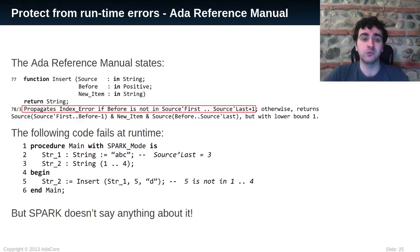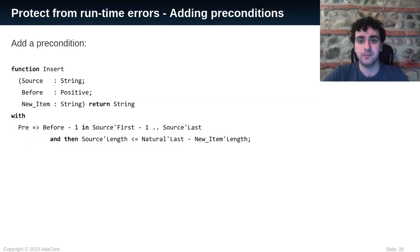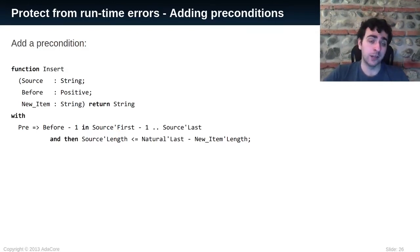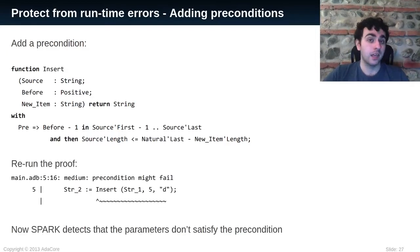We need to add a precondition to prevent calls to insert with inconsistent parameters. So first, we ensure that Before is in the expected range. The second part of the precondition is about the length — we need to make sure that the length of the resulting string is not larger than the last integer, otherwise at runtime there will be an overflow. If we rerun the proof, Spark now complains that the insert function has not been called with consistent parameters, which is what we want.